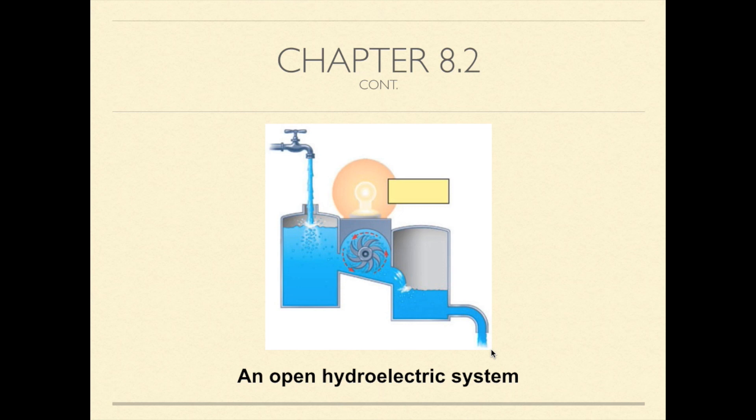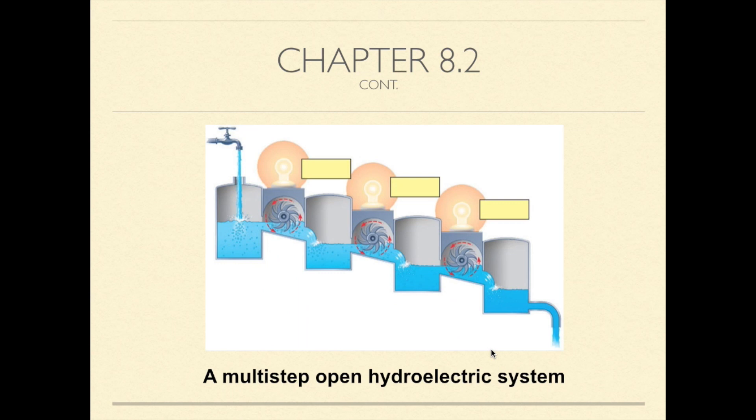But a catabolic process in a cell releases free energy in a series of reactions, not a single step. Cellular respiration is a lot like a multi-step open hydroelectric system. Glucose is broken down in a series of exergonic reactions that power the works of the cell. The product of each reaction becomes the reactant for the next, so no reaction reaches equilibrium. Some reverse reactions of respiration are constantly pulled in one direction, as the product of one reaction does not accumulate but becomes the reactant in the next step.